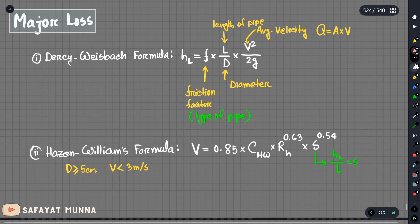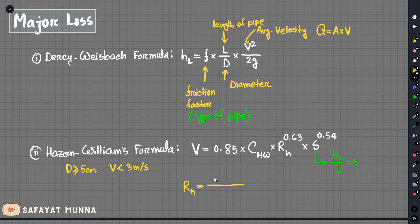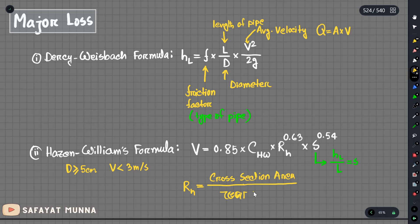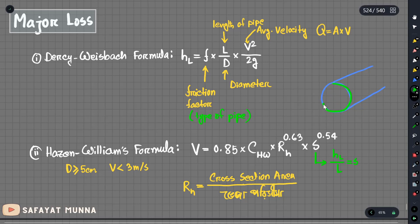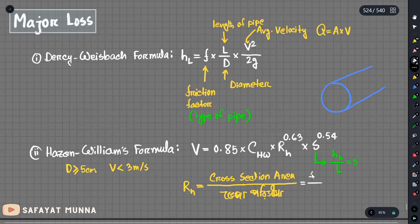The hydraulic radius is defined as the cross-sectional area divided by the wetted perimeter. For pipe flow, the wetted perimeter is the whole pipe circumference, which is 2πr or πd. The cross-sectional area is π/4 · d², and the perimeter is πd.